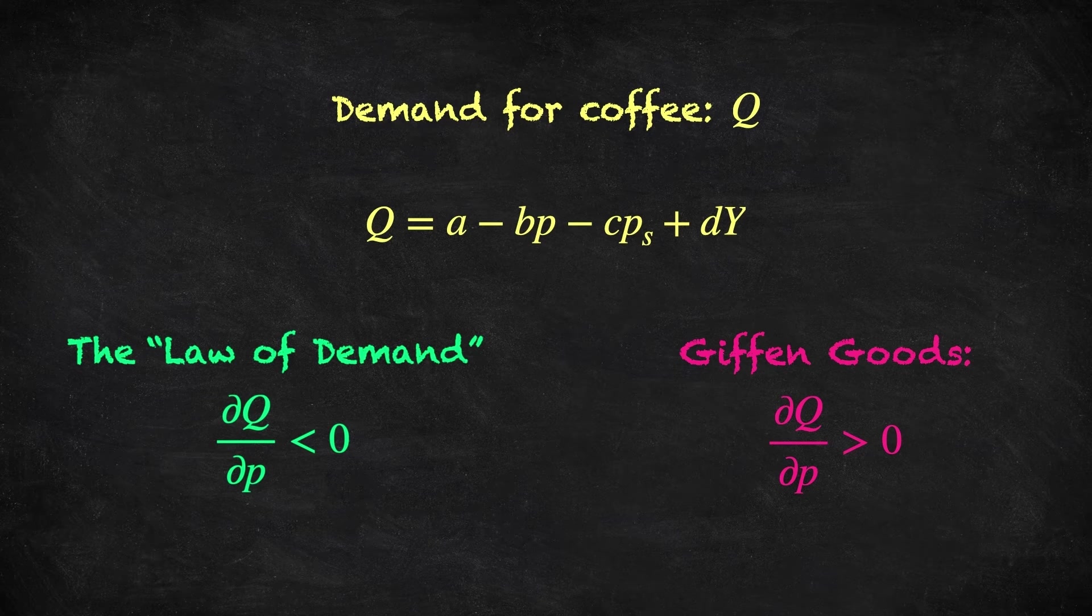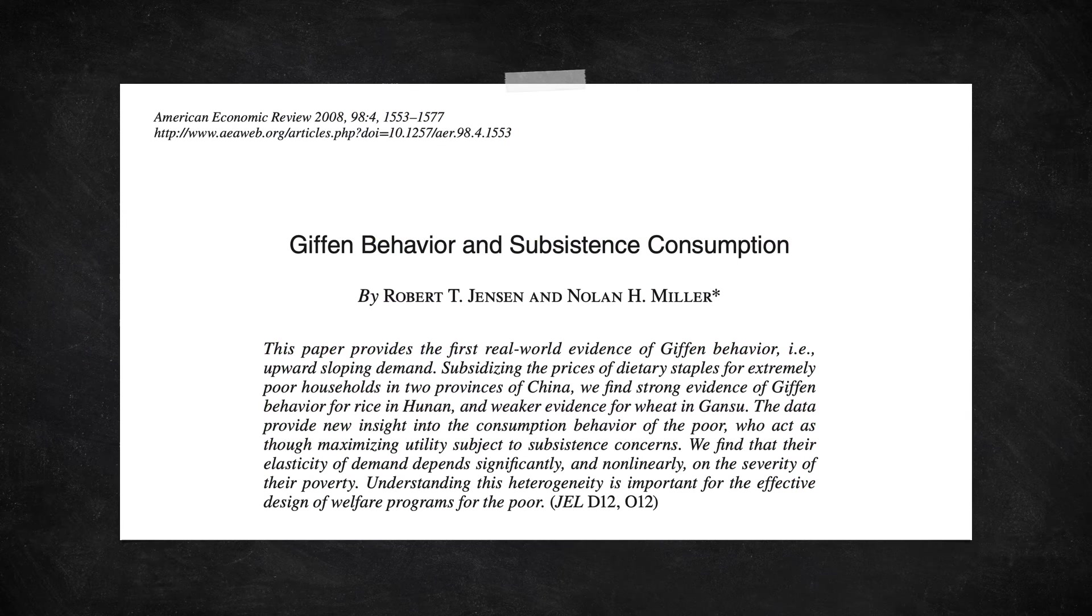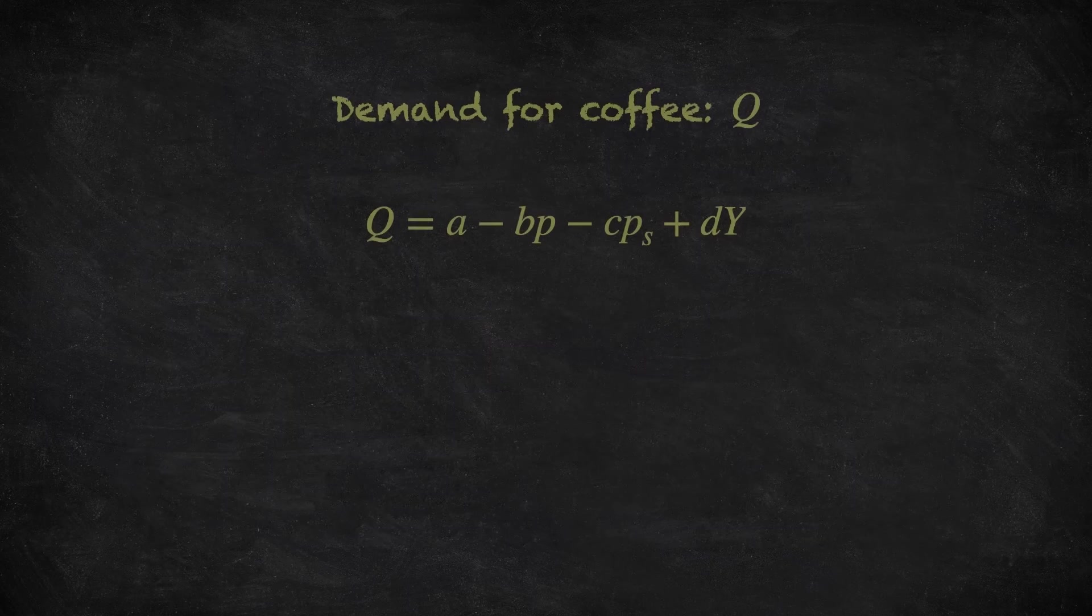However, the evidence has not really supported this hypothesis, but still we name such goods after Giffen. The search for real-life examples actually took a long time. This relatively recent article, Giffen behaviour and subsistence consumption, is from 2008, in a journal called the American Economic Review. This is the world's leading journal in economics, and here I've highlighted that this paper provides the first real-world evidence of Giffen behaviour. So it took more than a hundred years after Giffen suggested the idea for the first real-world evidence to be seen. In short, these types of goods are very rare, and in the overwhelming majority of cases, we will observe the law of demand being satisfied.